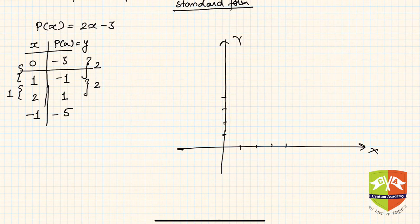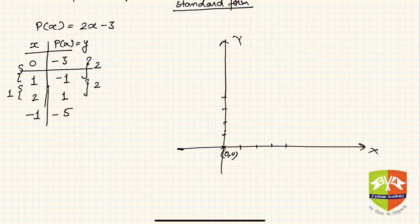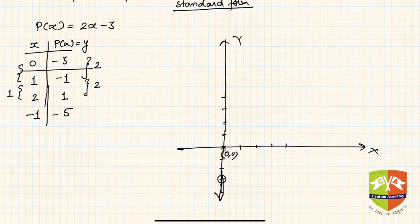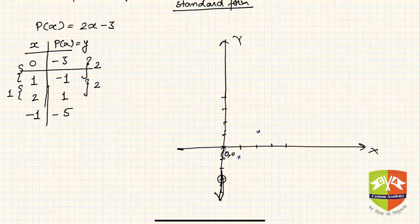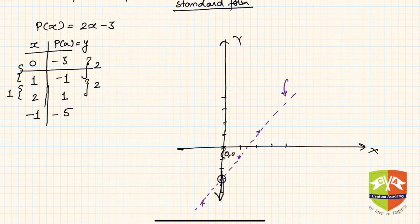The origin is (0, 0). The point (0, −3) has x-coordinate 0 and y-coordinate −3, so it lies below the origin. Then there is the point (1, −1), the point (2, 1), and (−1, −5). If you now join them freehand, you will see that all of them fall on a straight line — and hence this is called a linear polynomial. This is the graph for p(x) = 2x − 3.